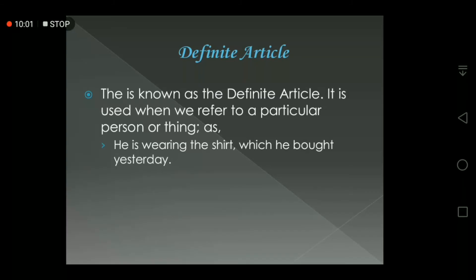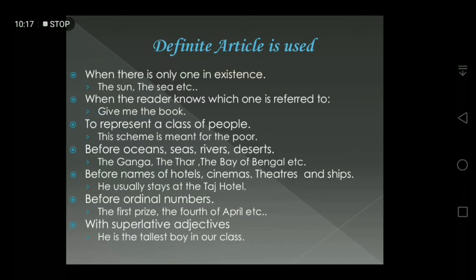Now, the definite article: 'the' is known as the definite article. It is used when we refer to a particular person or thing — just the opposite of the indefinite article. For example: 'He is wearing the shirt which he bought yesterday' — meaning that particular shirt he had bought yesterday. There are some rules for where we can use the definite article.